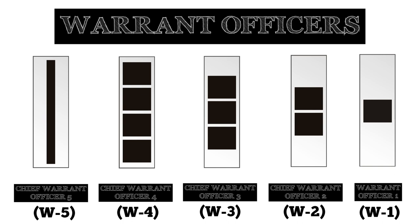The lowest rank for warrant officers is the rank of Warrant Officer One. In order to be appointed as a Warrant Officer One, soldiers must be proficient both at leading and their technical specialty. A Warrant Officer One usually performs duties including technical leader, trainer, operator, advisor, and manager, among other duties. The rank insignia of a Warrant Officer One is a vertical silver bar with one black stripe.